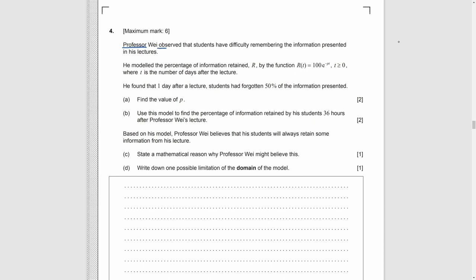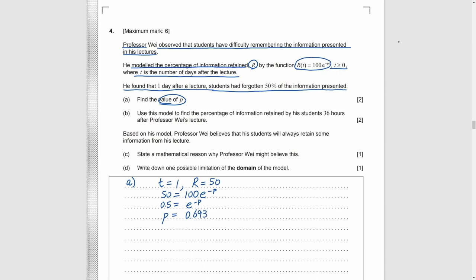Question 4. A professor has a function R, representing the percentage of the information retained by his students after his lecture. T is the number of days after the lecture. Also, he finds that after one day, only 50% of information is retained by his students. Part A, we need to find P. We just substitute 1 for T and 50 for R into the function. By calculator, we can get 0.693. Part B, we need to find the information retained after 36 hours. 36 is 1.5 days. So we just put 1.5 into T and calculate R and we get 35.36.